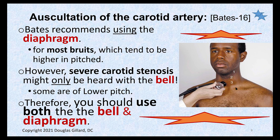Always use the bell because bruits are usually low-pitched, especially with severe stenosis. However, Bates recommends also using the diaphragm because most bruits tend to be higher-pitched. The severe, most deadly ones will be low-pitched, so if you use only the diaphragm you could miss them. Bottom line: use both. It takes only about nine seconds per location — 1001, 1002, 1003, move — then repeat with the diaphragm.